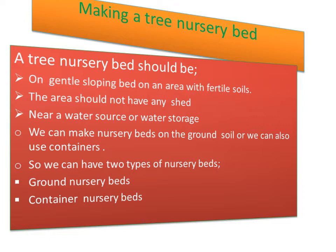The area should not have any shade — no trees or buildings near your tree nursery bed. There should be no trees or buildings nearby, to allow free rainwater and direct sunlight so that the seedlings can grow and proper germination can take place.